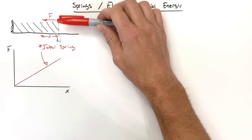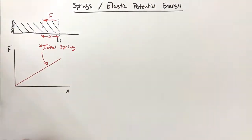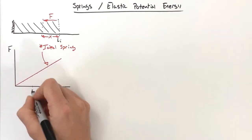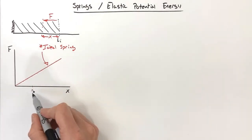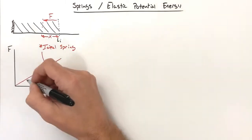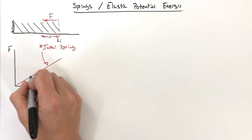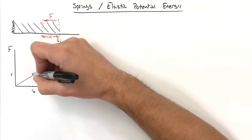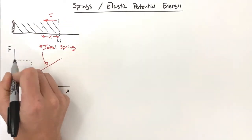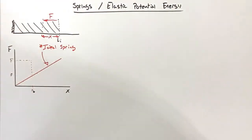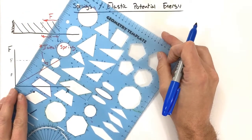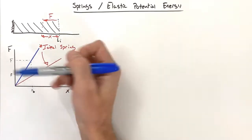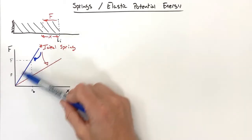If we take a stiffer spring and compress it the same distance x₁, for the original weak spring it only takes a little bit of force. For a stiffer spring compressed the same displacement, we'd expect it to require more force. We'd find that the line on the graph is steeper — it's still an ideal spring with a linear relationship between force and displacement, just with a steeper slope.